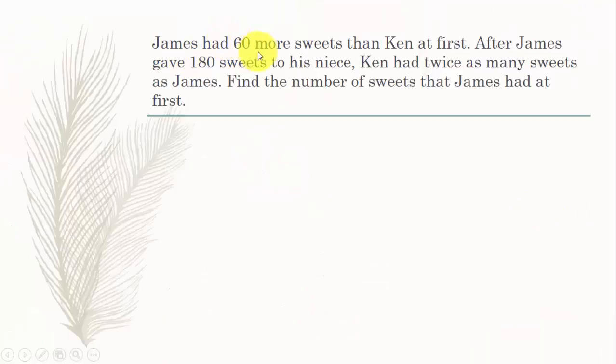James had 60 more sweets than Ken at first. After James gave 180 sweets to his niece, Ken had twice as many sweets as James. Find the number of sweets that James had at first.